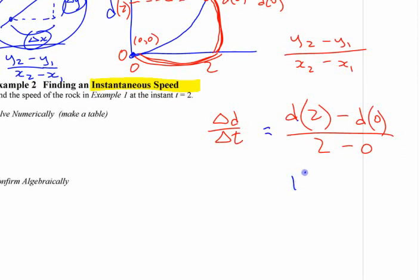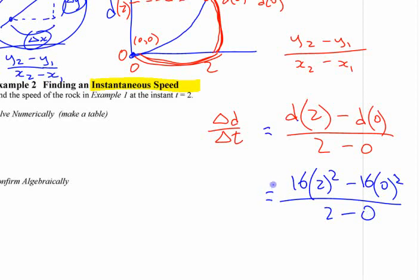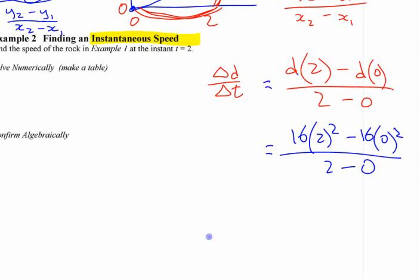I'm actually going to write the function in here and say 16 times 2 squared minus 16 times 0 squared. I realize it looks a lot more complicated than it needs to be, but to match it up when we do something later, it's helpful if we see that. Do you see where that comes from? So you can work out some of those numbers in your head, right? 16 times 2 squared is 64. At 2 seconds, it's fallen 64 feet. Minus 0 over 2 minus 0, or in other words, what is that?